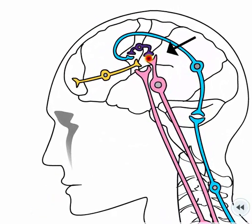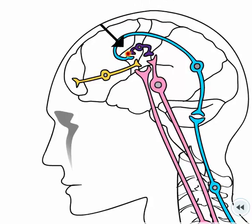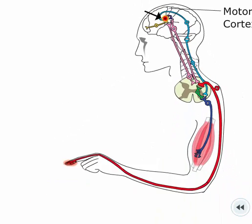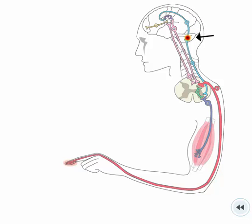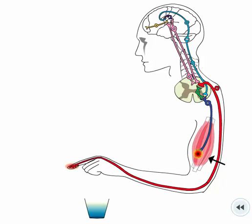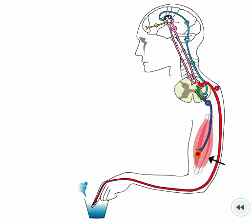Once you feel pain, signals are sent to the motor area of the cortex. The motor cortex sends impulses to the cerebellum where motor activity is coordinated. Then the impulses are sent through the spinal cord to the muscles where they can cause muscle contraction for voluntary movements such as hand or arm movement.